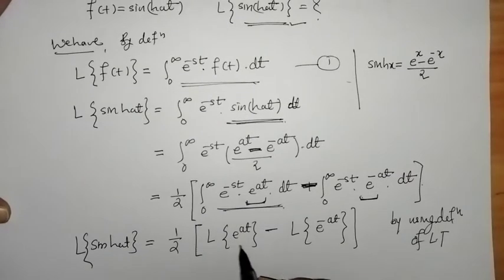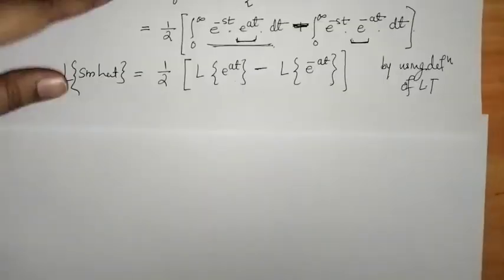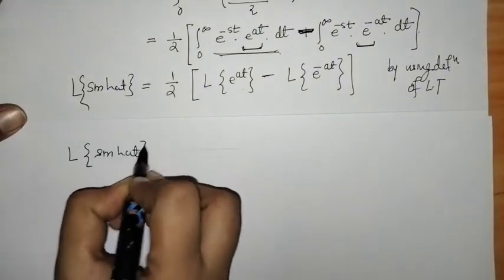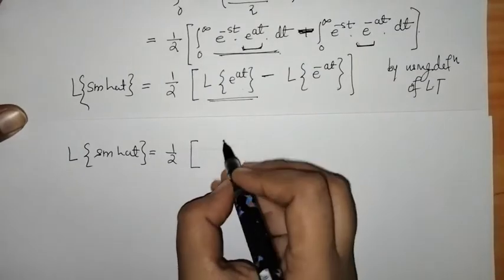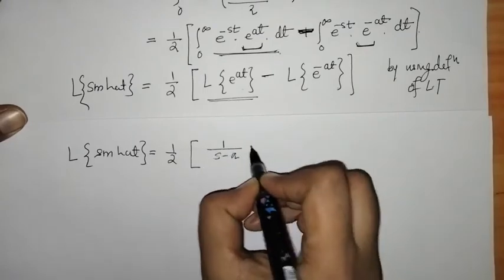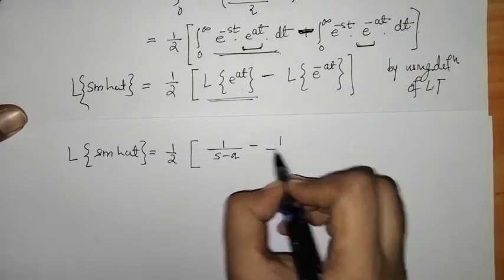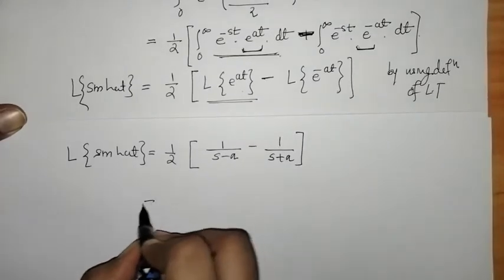Next we write down the Laplace of e raised to at and e raised to minus at. We know that the Laplace of e raised to at is 1 upon s minus a, and the Laplace of e raised to minus at is 1 upon s plus a.